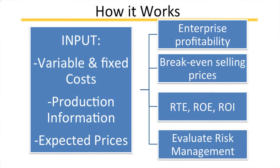How it works at a high level: we get the input side — our variable and fixed costs, and our production information that we plug into the program. Then you put in your own expected prices based on the forecasts and industry outlook. It's going to help you analyze on a year-to-year basis your profitability on the enterprise. It's not a full accounting program, but it helps you year-to-year to make decisions. It will calculate your break-even selling points and give you graphs and decision tools on your return to equity and return on investment — the starting point to evaluate your risk management going forward.